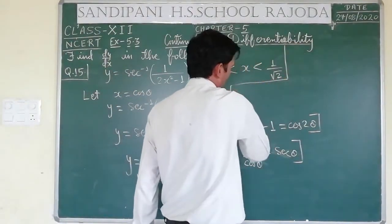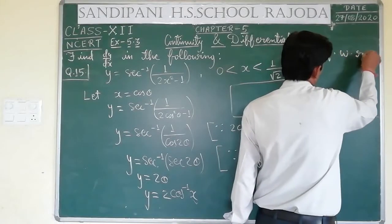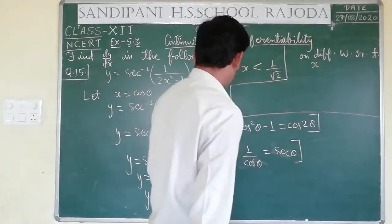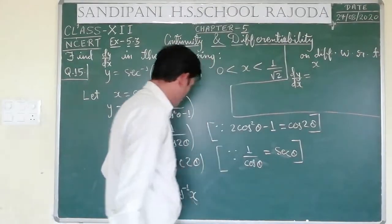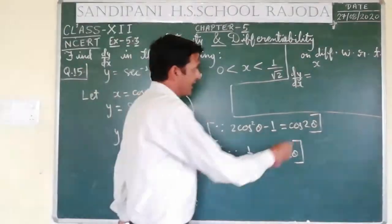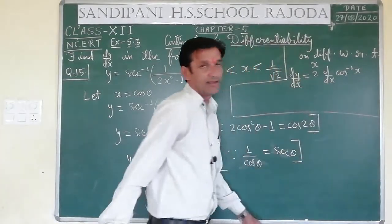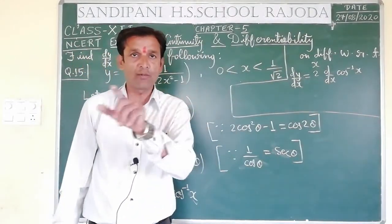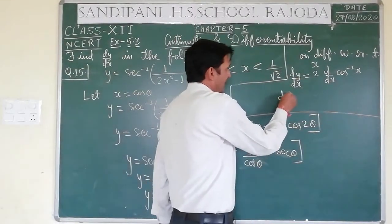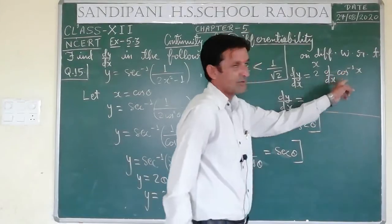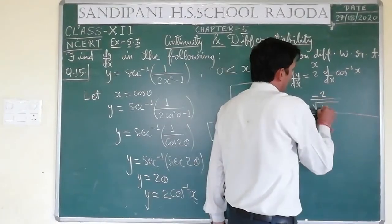On differentiating with respect to x: dy/dx — हम 2 को बाहर निकालेंगे क्योंकि 2 function of x नहीं है — it is constant. So d/dx(cos⁻¹ x). cos⁻¹ x का differentiation -1/√(1 - x²) होता है। तो dy/dx = 2 × (-1/√(1 - x²)) = -2/√(1 - x²).